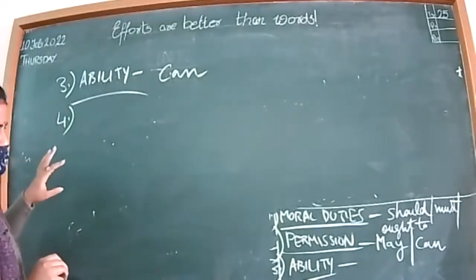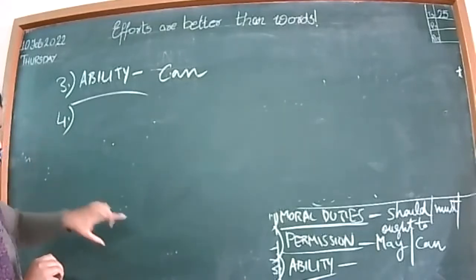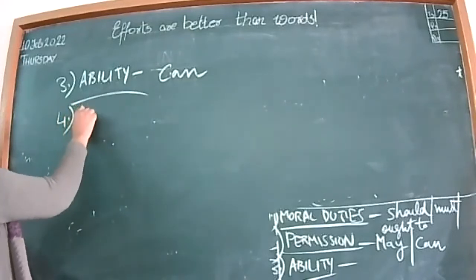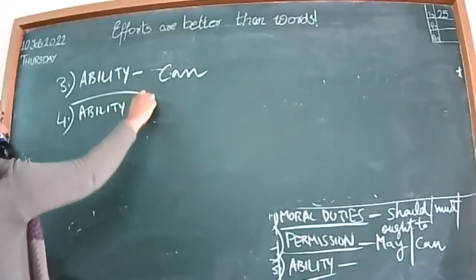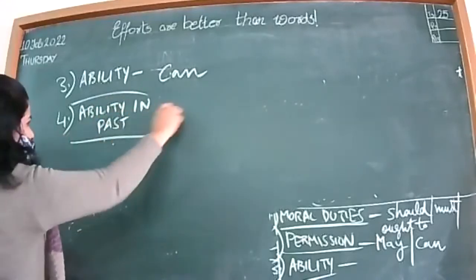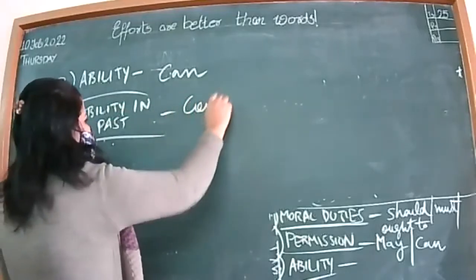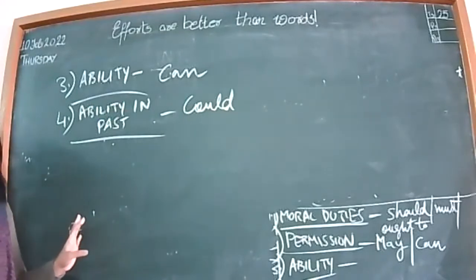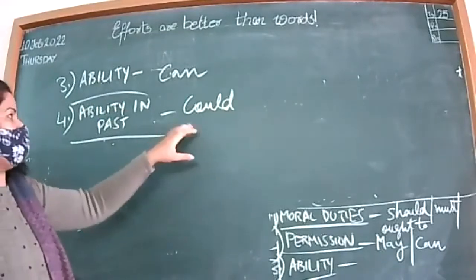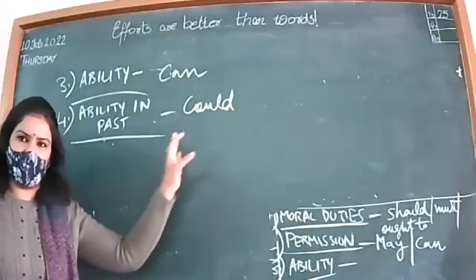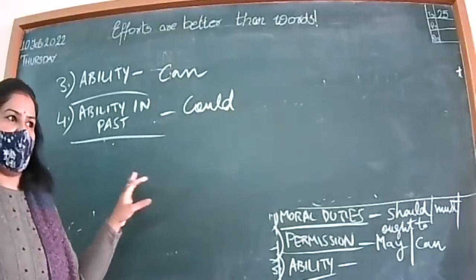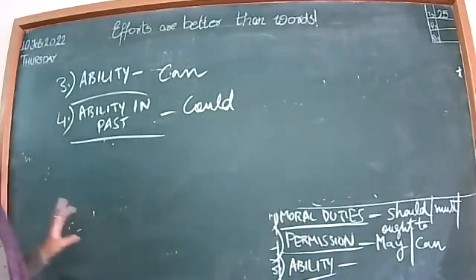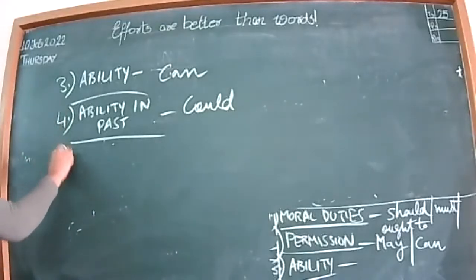One modal has multiple uses. We've done can for ability. Now, ability in the past — we use could, the past form of can. For example: 'I could run very fast when I was young, but now I cannot.' So when we talk about abilities of the past, we use could. 'He could swim very fast at the age of 10, but now he is not able to do so.'